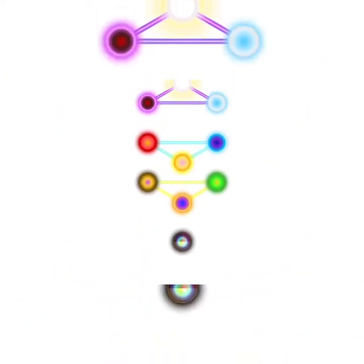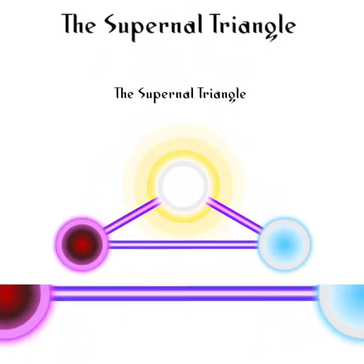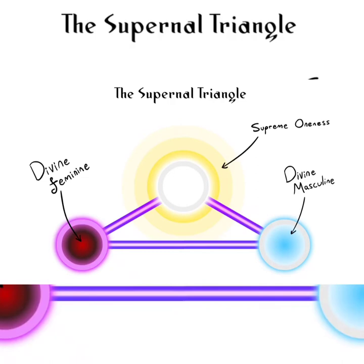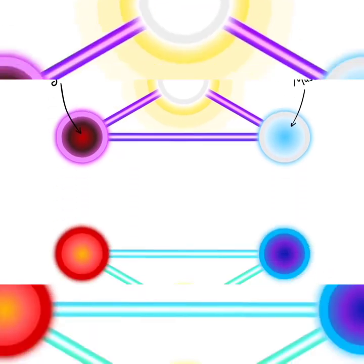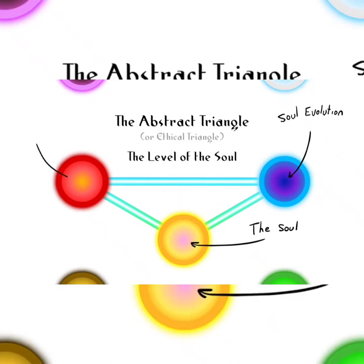The tree also has three triangles. The Supernal Triangle is made up of the top three Sephira and represent the three states of God: the supreme oneness from which all things emerge, the divine masculine, and the divine feminine emanations which go on to create all things. The central triangle is called the Abstract or Ethical Triangle, which is the level of the soul or the part of us which experiences infinite lifetimes and continues to evolve our spirit beyond the understanding of our physical existence.